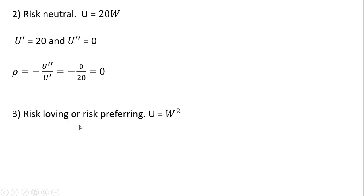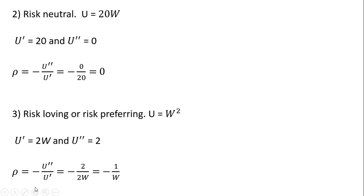Let's look at a risk loving or risk preferring person. Here the utility function would take on a form something like this, where w is raised to a value greater than 1. Our first derivative gives us 2w. The derivative of 2w is 2. And you'll note here that our measure of risk aversion, rho, is going to be negative.